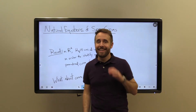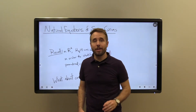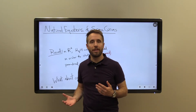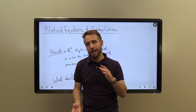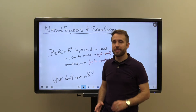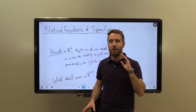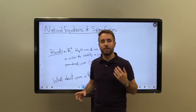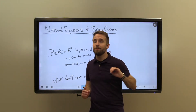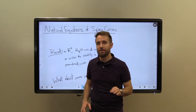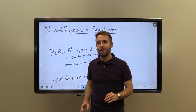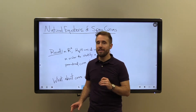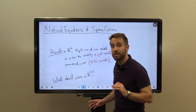Today we're going to take a look at curvature and torsion, the two functions introduced last video, and we're going to see that in a very real sense these two functions are the natural equations for a space curve, in the sense that they completely identify the space curve up to an isometry of R3. They are really the two defining functions of a space curve.